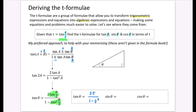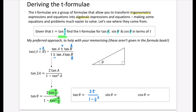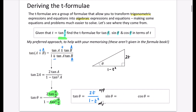There is a definition of what tan theta actually is: it's always the opposite divided by the adjacent. So I can take this onto a triangle where the angle is theta. The opposite is 2T and the adjacent is 1 minus T squared. To find the hypotenuse, it's the square root of (2T) squared plus (1 minus T squared) squared — that is the square root of 4T squared plus 1 minus 2T squared plus T to the power of 4.